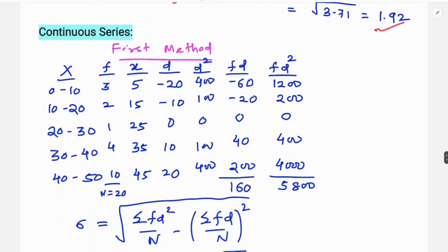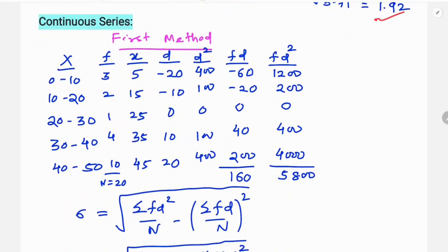For a continuous series using the first method, given class intervals 0–10, 10–20, 20–30, 30–40, find midpoints: 5, 15, 25, 35, 45. Taking assumed mean as 25, calculate deviation d = midpoint minus 25: minus 20, minus 10, 0, 10, 20. Then d-squared: 400, 100, 0, 100, 400.